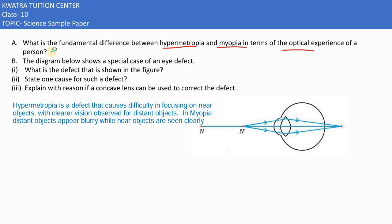What is the difference between seeing? First of all, we will write hypermetropia. It is a kind of defect that causes difficulty in focusing on near objects.